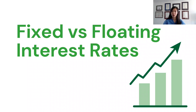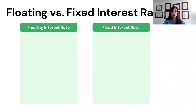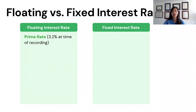The federal portion of your loan has an interest rate of 0% until March 2023. After that, there are two interest rate options to choose from: fixed versus floating. The floating interest rate is currently the prime rate — that's 3.2% at the time of recording, but it does change. I'd suggest Googling the Bank of Canada prime rate to find the current rate when you're paying down the loan. This is the default option.